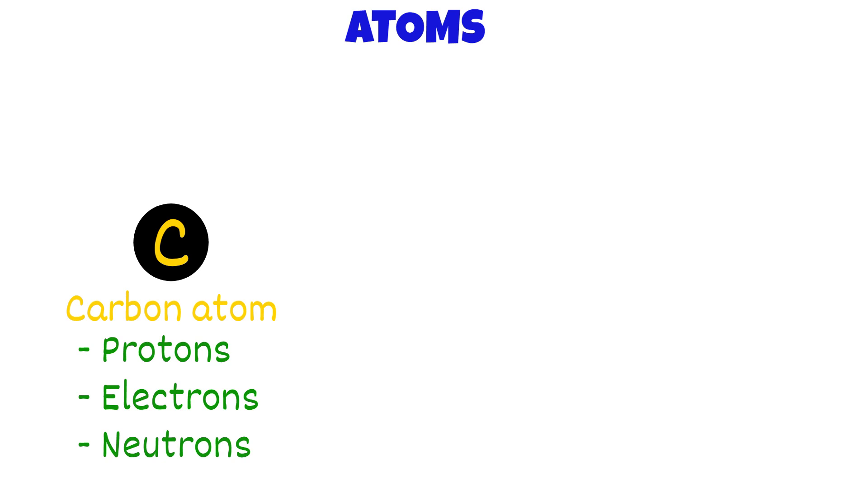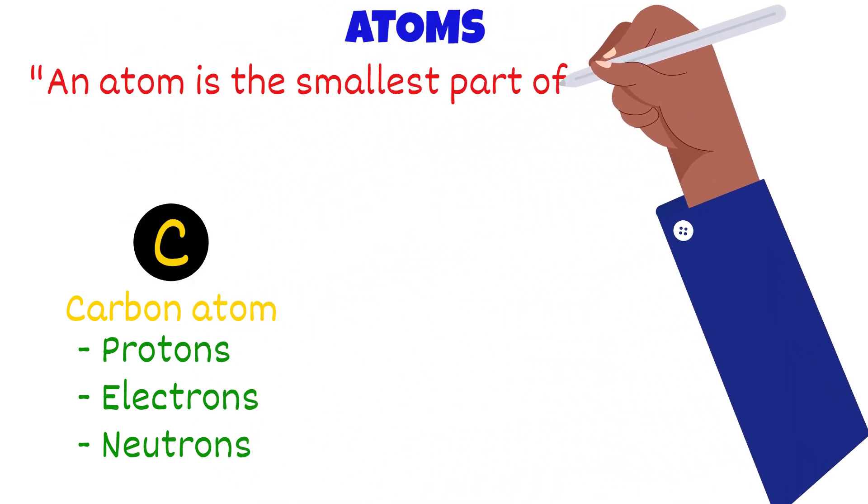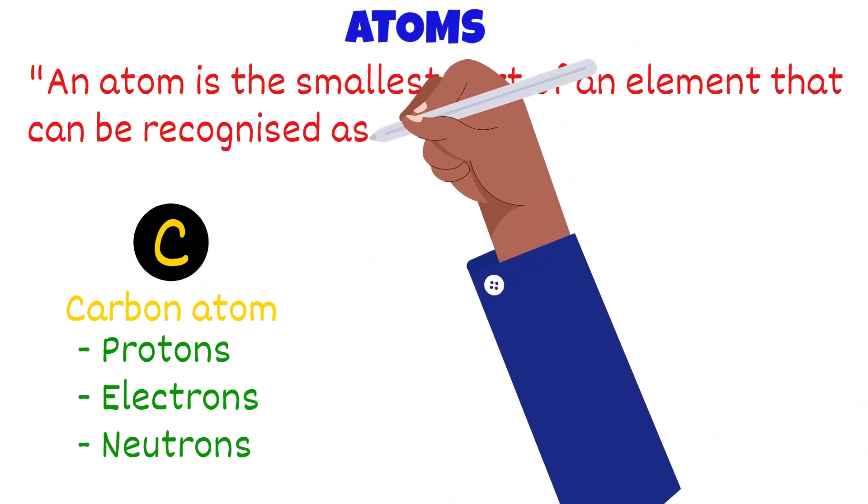So where does this lead us to? The definition of an atom. An atom is the smallest piece of the substance that can still be recognized as that element.